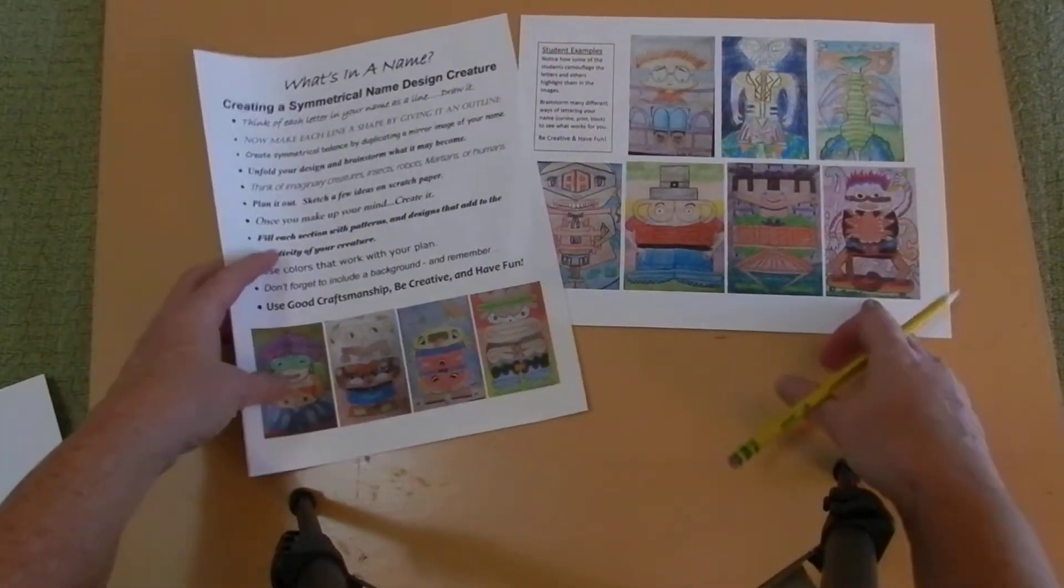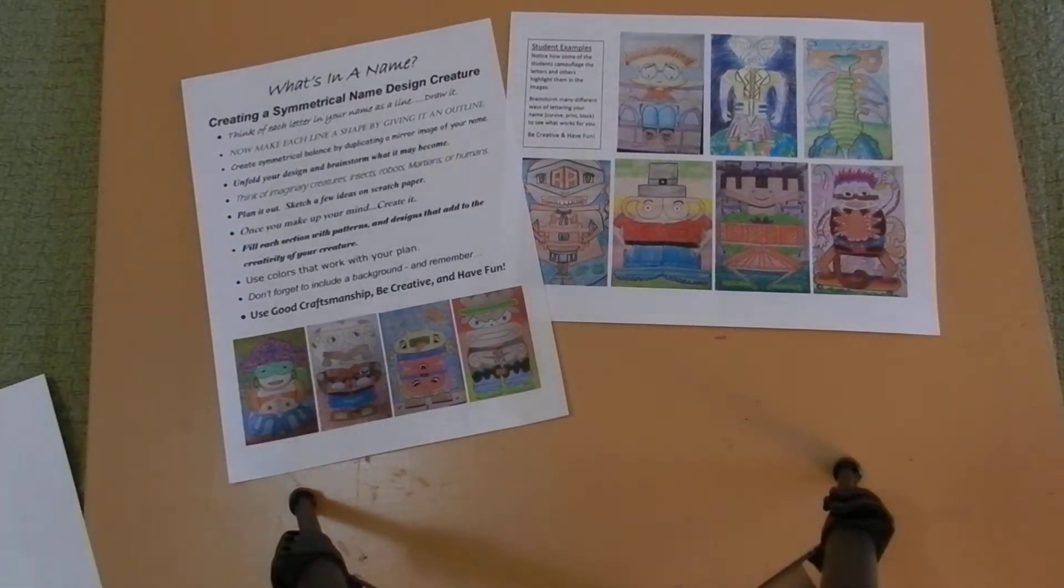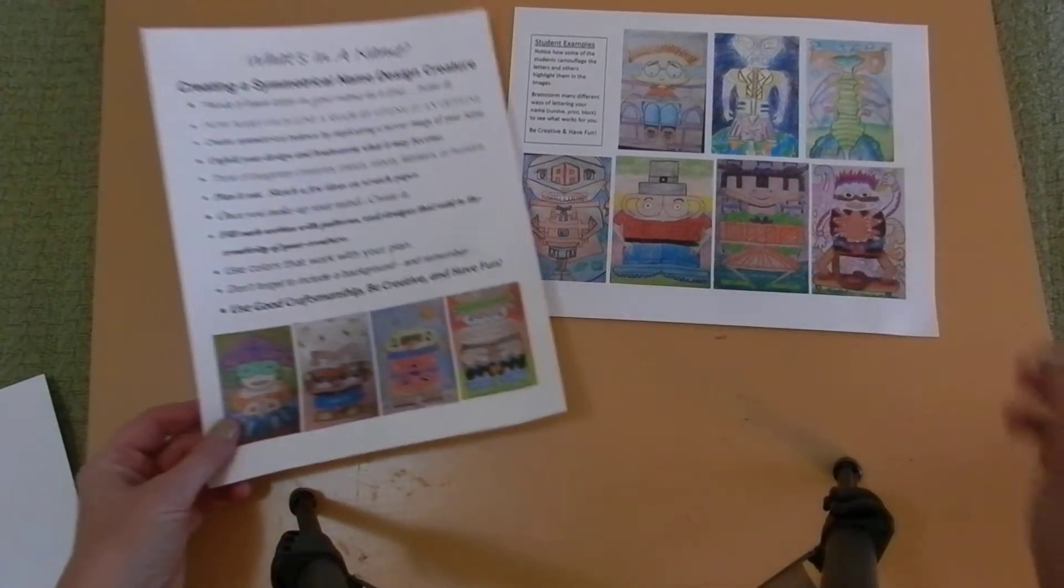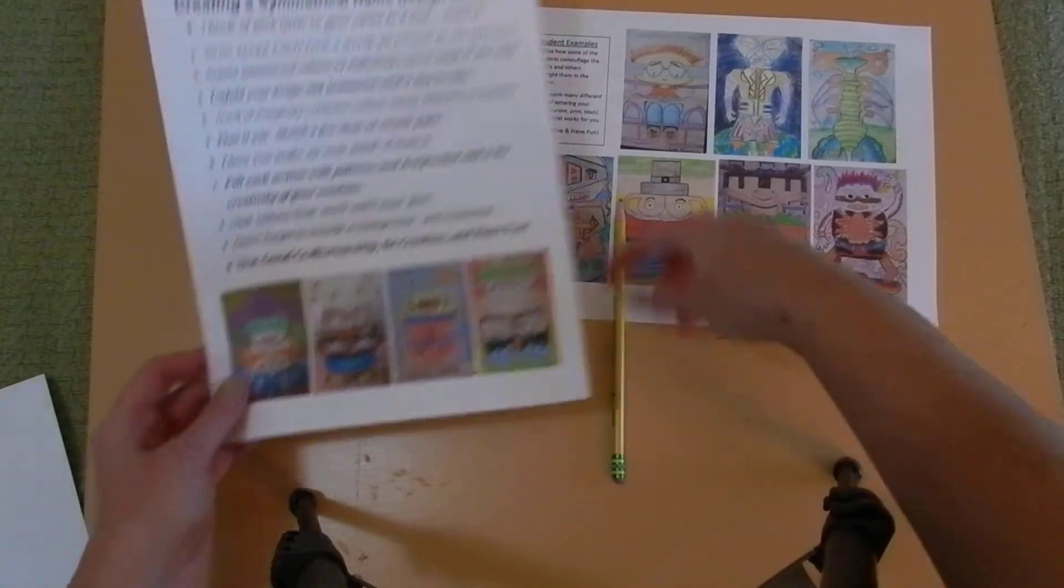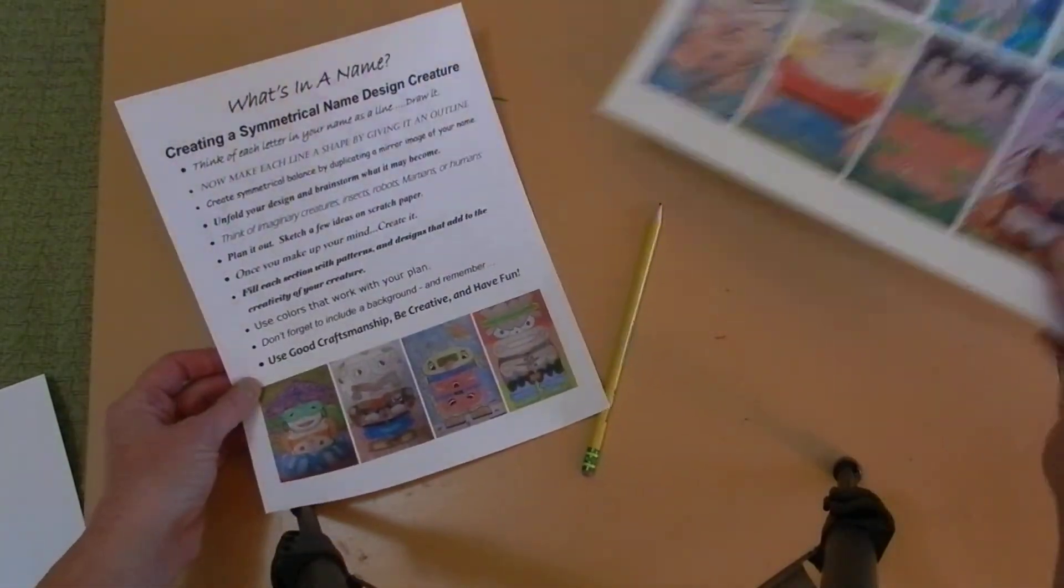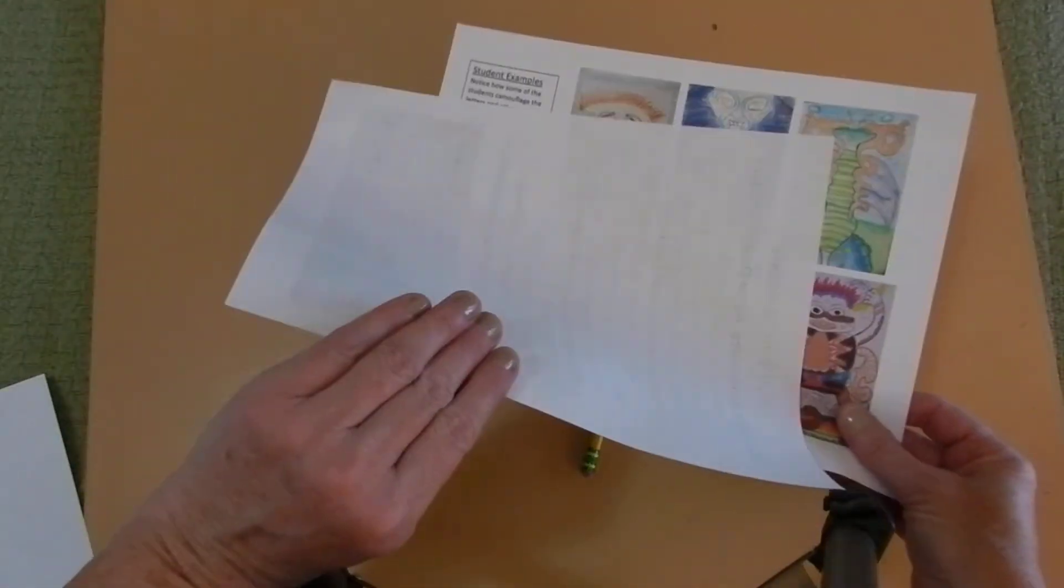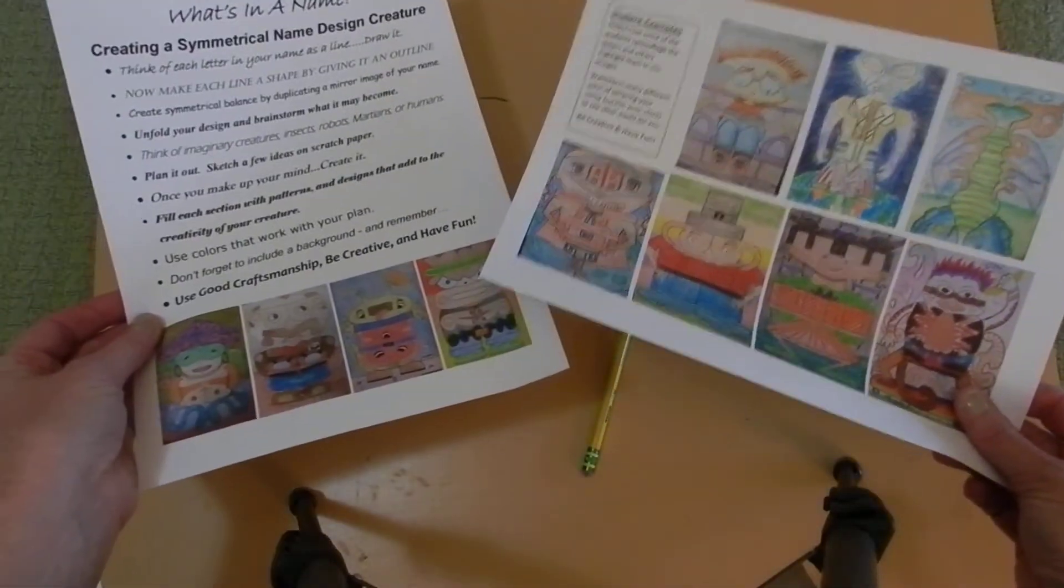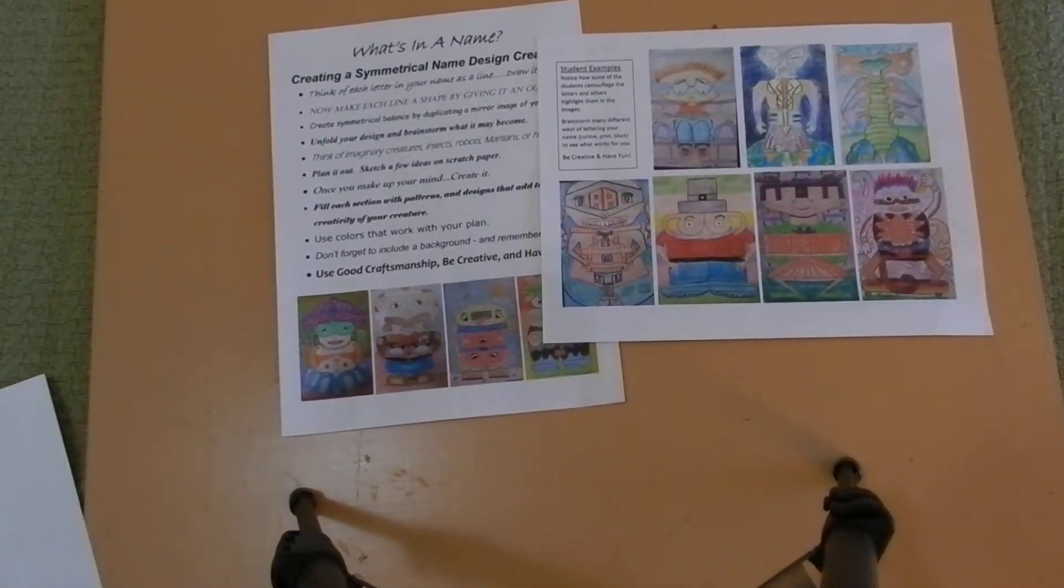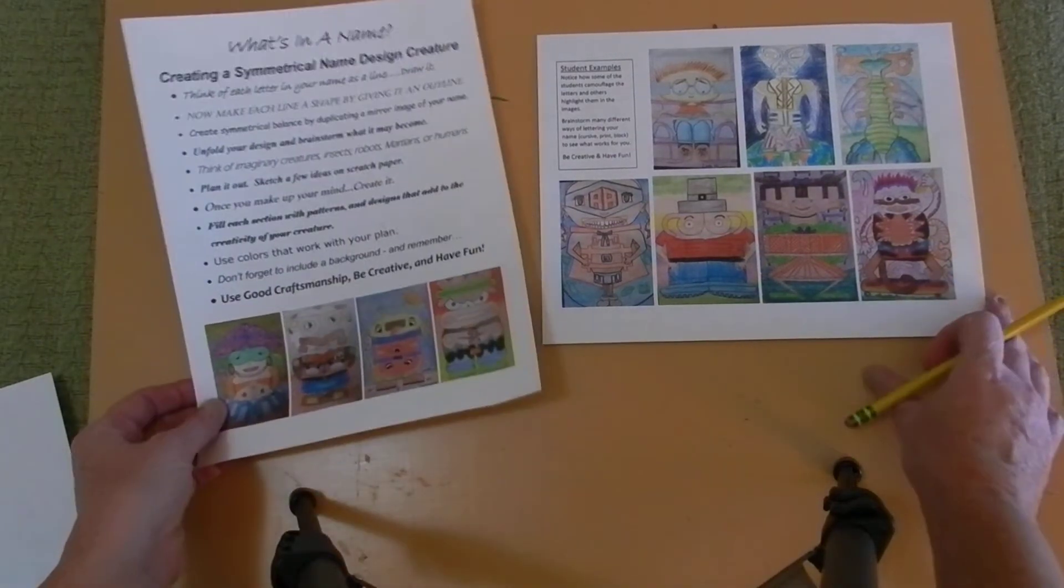I've spread my camera up a little bit higher so you might see a lot of different things in the frame, so let me just go over what I have in front of me. First of all, I have the handout that you have or that you will have and I've got the samples. The samples are actually photocopied on the back but this is the original so I've got single-sided versions. What's in a name? Creating a symmetrical name design creature.